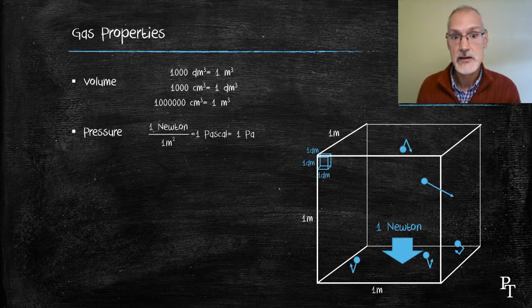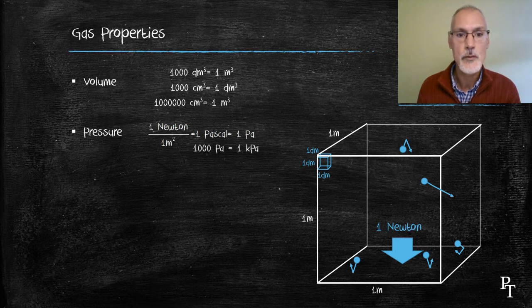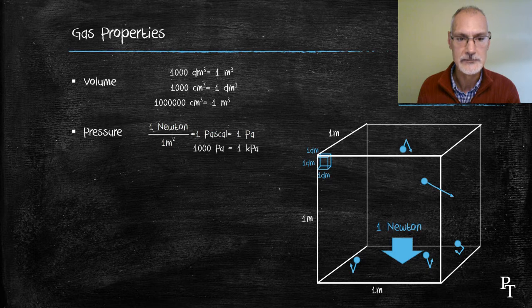Pascals are often expressed, at least on the weather reports, in units called kilopascals, where a thousand Pascals equal but one kilopascal. Typical air pressure on an average day is around a hundred kilopascals.